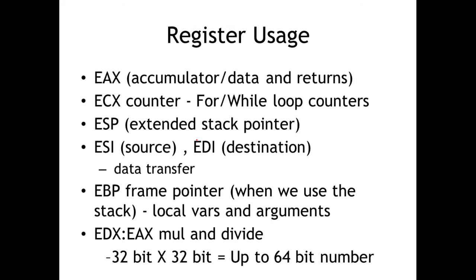So what do we use the registers for? The four general purpose registers, even though they're general purpose, tend to have particular purposes. EAX can be used as an accumulator or for data — maybe inside a loop we want to accumulate data and store it in EAX. EAX is also typically where a function's return value is placed when it returns. So if your function provides the sum of something, when it returns it leaves that sum inside EAX.